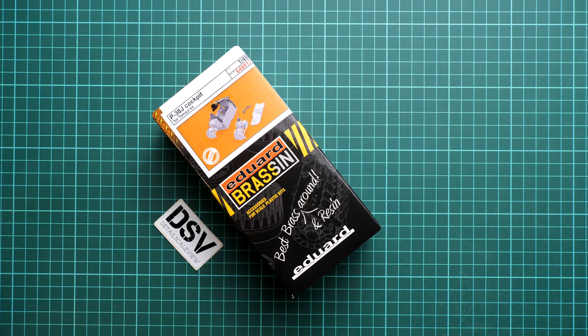Hello everyone, today we have a new video review. This time we're going to talk about aftermarket accessories from Eduard. It's a brassin set in 1/48 scale, and it's quite unusual because here we get a P-38J cockpit.